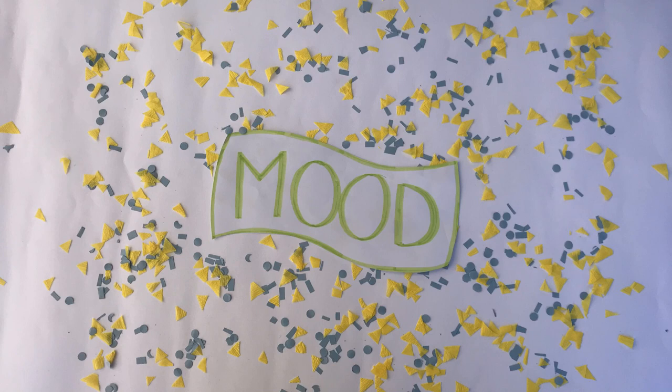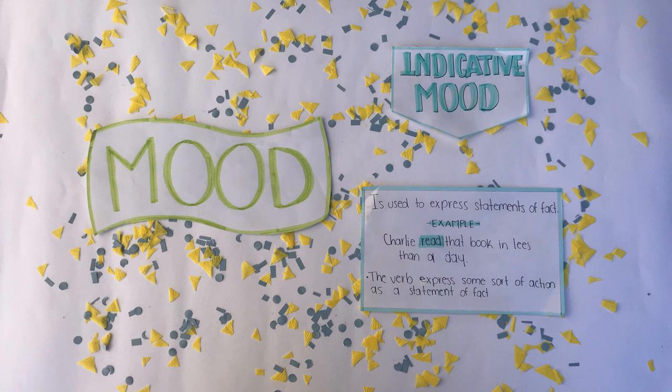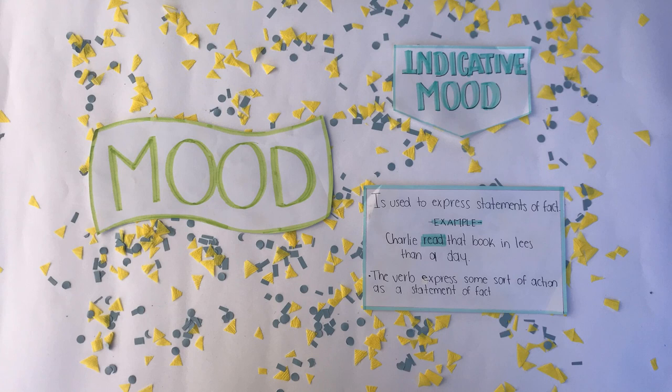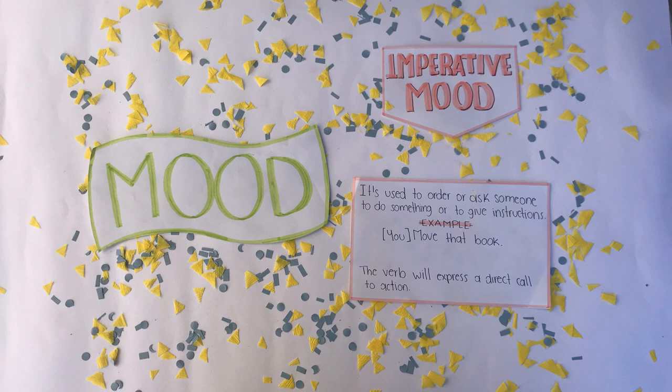Mood is a verb category or form which indicates whether the verb expresses a fact, a command, a question, a condition, or a possibility. Indicative mood is used to express a statement of fact — for example, Charlie read that book in less than a day. The verb expresses some sort of action as a statement of fact. Imperative mood is used to order or ask someone to do something, or to give instructions — for example, move that book. The verb expresses a direct call to action.